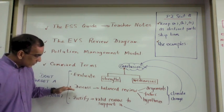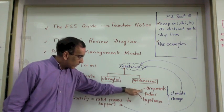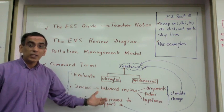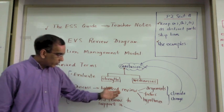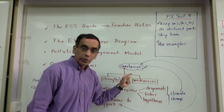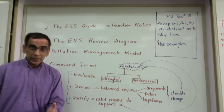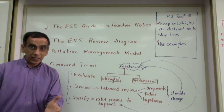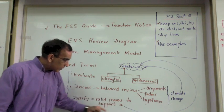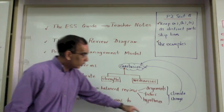Similarly, when asked to discuss, you should present a balanced review including arguments, factors, and hypotheses. For example, you may be asked to discuss climate change, in which case you would have to produce arguments for both sides, again ending with a conclusion. Also, if you're asked to justify the criteria for a good protected area, for instance, you would review that area and cite valid reasons to support your claim that it is a successful area, ending up again with a conclusion.